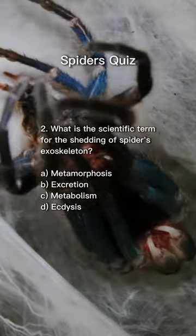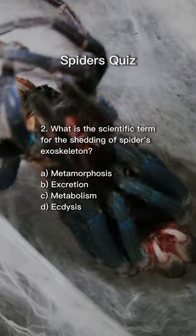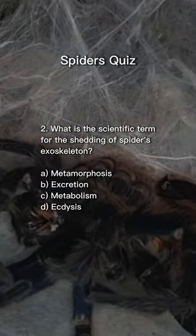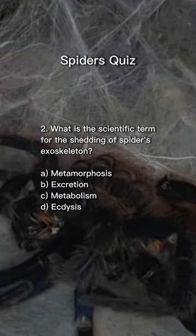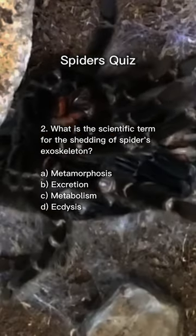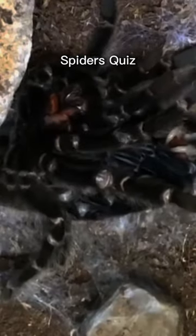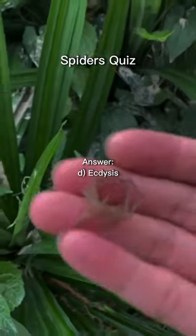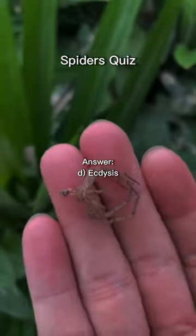2. What is the scientific term for the shedding of a spider's exoskeleton? Answer: D. Ecdysis.